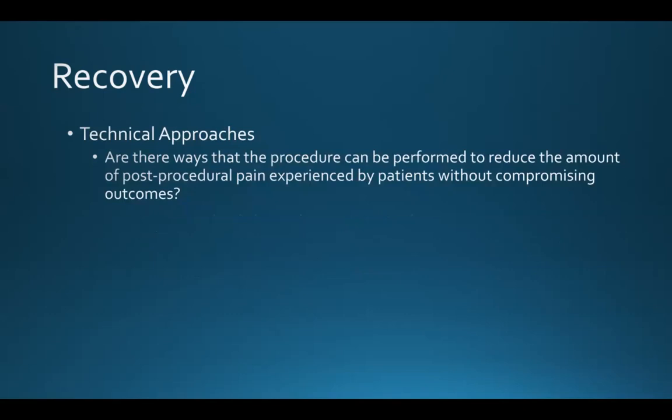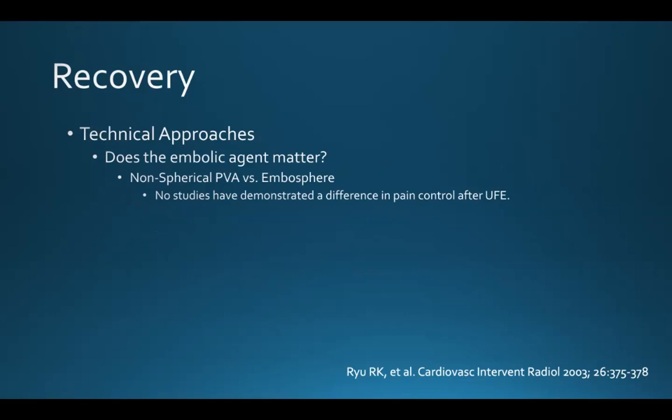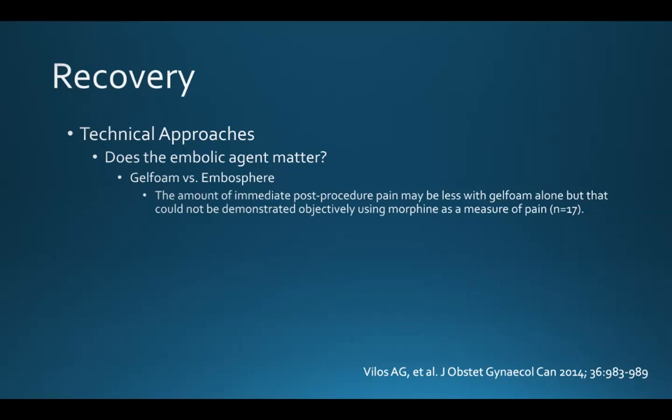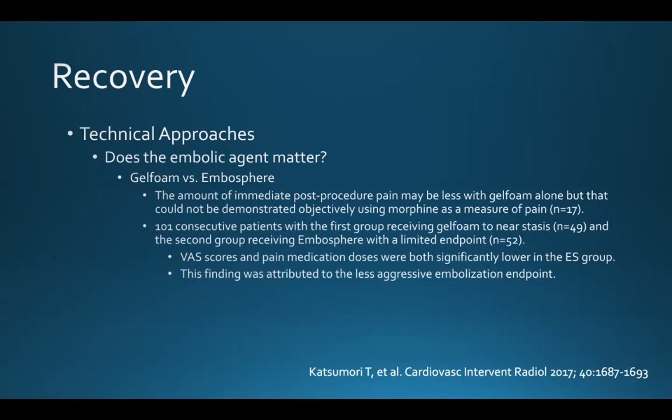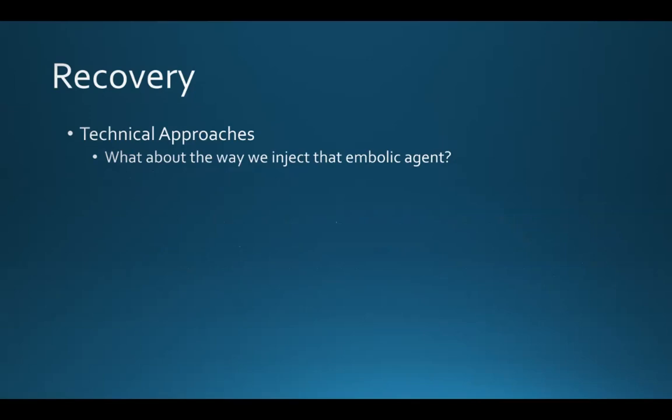The next question is whether technical modifications can reduce post-procedural pain without compromising outcomes. Some have wondered whether the choice of embolic agent matters. A study comparing non-spherical PVA versus embospheres showed no difference in pain control. When gel foam versus embosphere was evaluated, immediate post-procedure pain may be less with gel foam alone, but this couldn't be demonstrated objectively using morphine as a measure. Katsumori studied 101 consecutive patients — one group receiving gel foam to near stasis, the second receiving embosphere with a limited endpoint — and visual analog scores and pain medication doses were both significantly lower in the embosphere group, attributed to the less aggressive embolization endpoint.